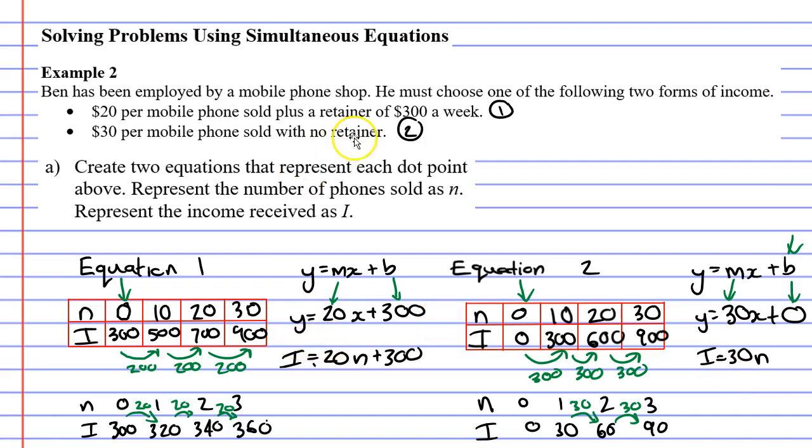You might have noticed that our retainer was our y-intercept. And that the money we get per phone is our gradient. Equation 2 was 30. Our gradient was 30. We had no retainer. We have no y-intercept. Well, we've got questions B, C and D to go. And I'm pretty sure we're going to be using these equations throughout.